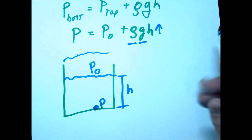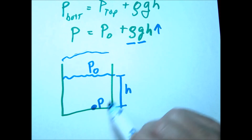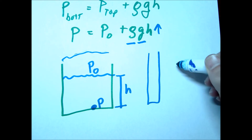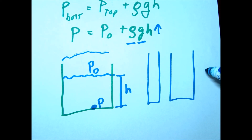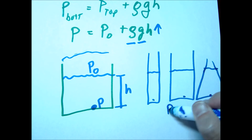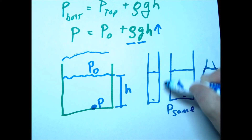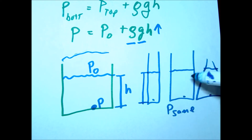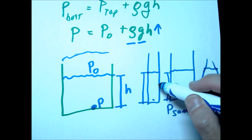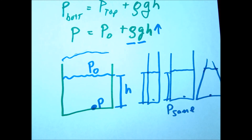An important concept: notice that the area doesn't matter. Whether I have a wide container, a narrow container, or any shape, if they're all filled to the exact same height, the pressure at the bottom would be the same. All that matters is how high the fluid is above that point — and of course the density, so using mercury instead of water would give a different result.